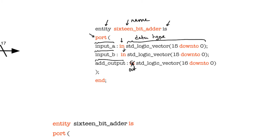Ignore the data type 'std_logic_vector' for now — this just describes a bit. And '15 down to 0' indicates that this is a vector of bits with indices from 15 down to 0, meaning the vector is 16 bits long. We can describe ports of type 'in', of type 'out', and of type 'inout'. Each of the ports can be of any length we want.